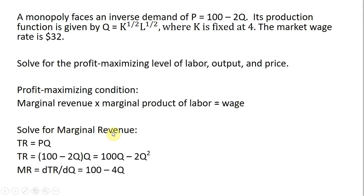Let's first solve for marginal revenue. Marginal revenue is going to come from the total revenue equation, where total revenue is price times quantity. Price is 100 minus 2Q, and that 100 minus 2Q is then multiplied by the quantity. Simplifying that, we get TR equals 100Q minus 2Q squared. Now taking the derivative, we get 100 minus 4Q.